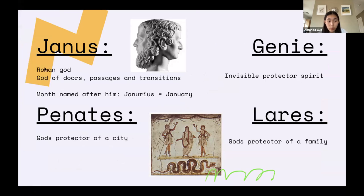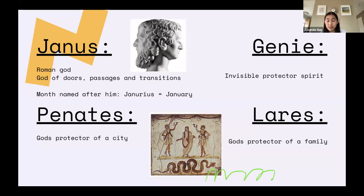Lastly, we're going to talk about Janus, the Genius, the Penates, and the Lares. Janus is a Roman god with no Greek equivalent — he is the god of doors, passage, and transitions, and the month named after him is January. The Genius is like an invisible protector spirit: when you're born, a Genius is born too, and when you die, the Genius dies too — basically your own personal protector during life. The Penates are the god-protectors of a city, and the Lares are equivalent but protect a certain family.